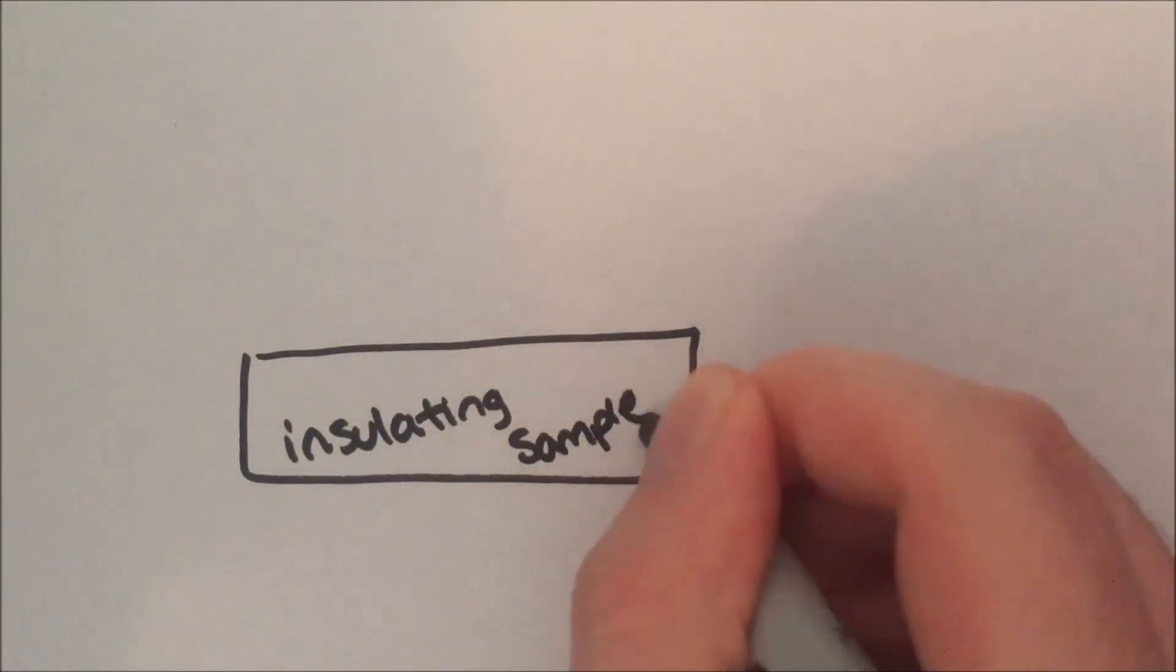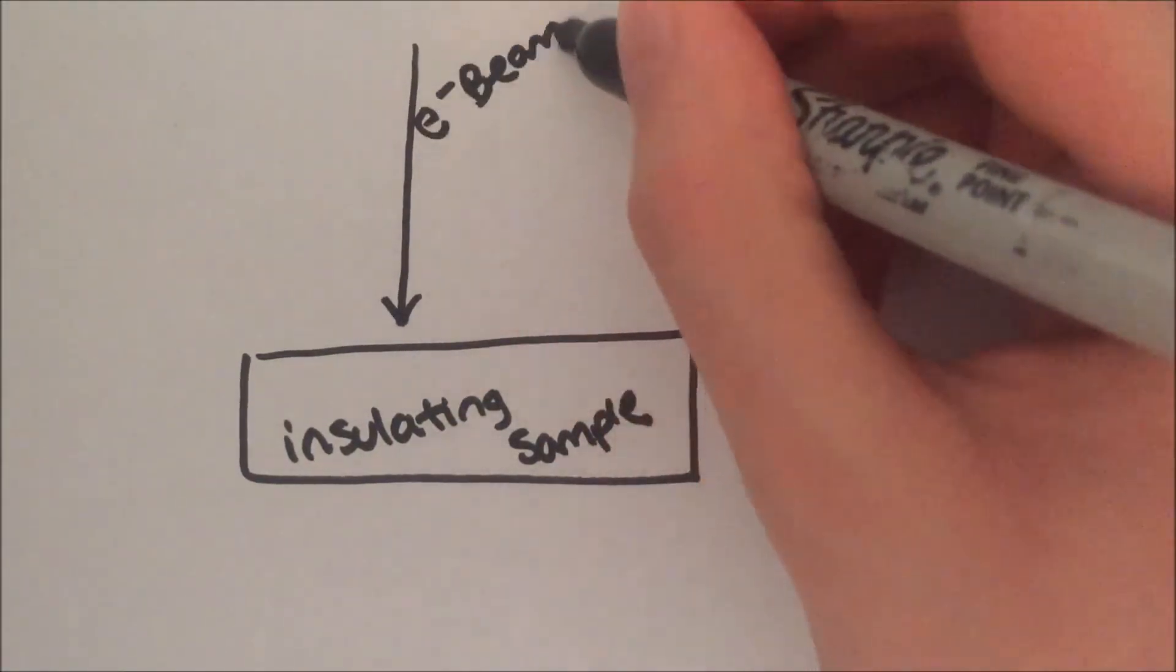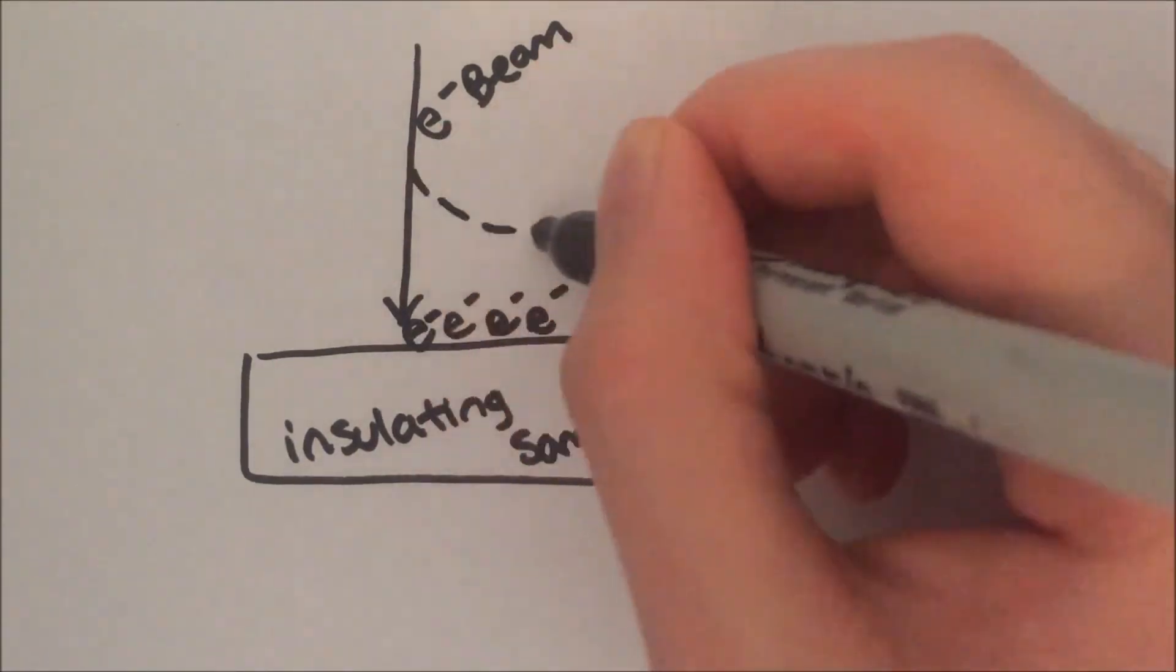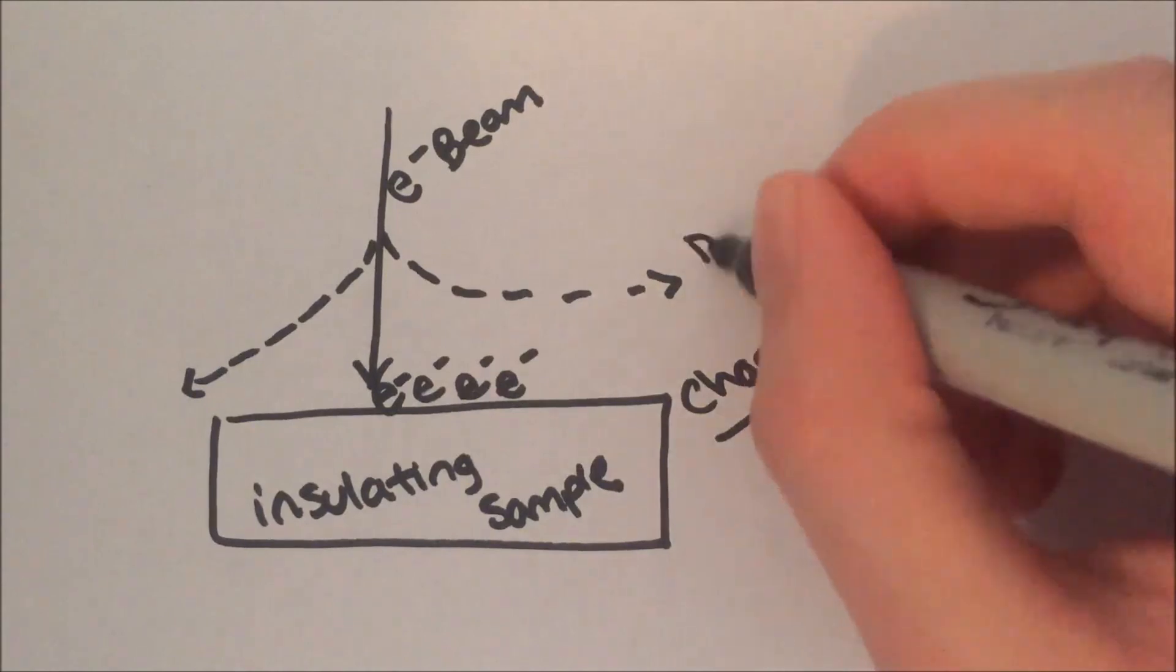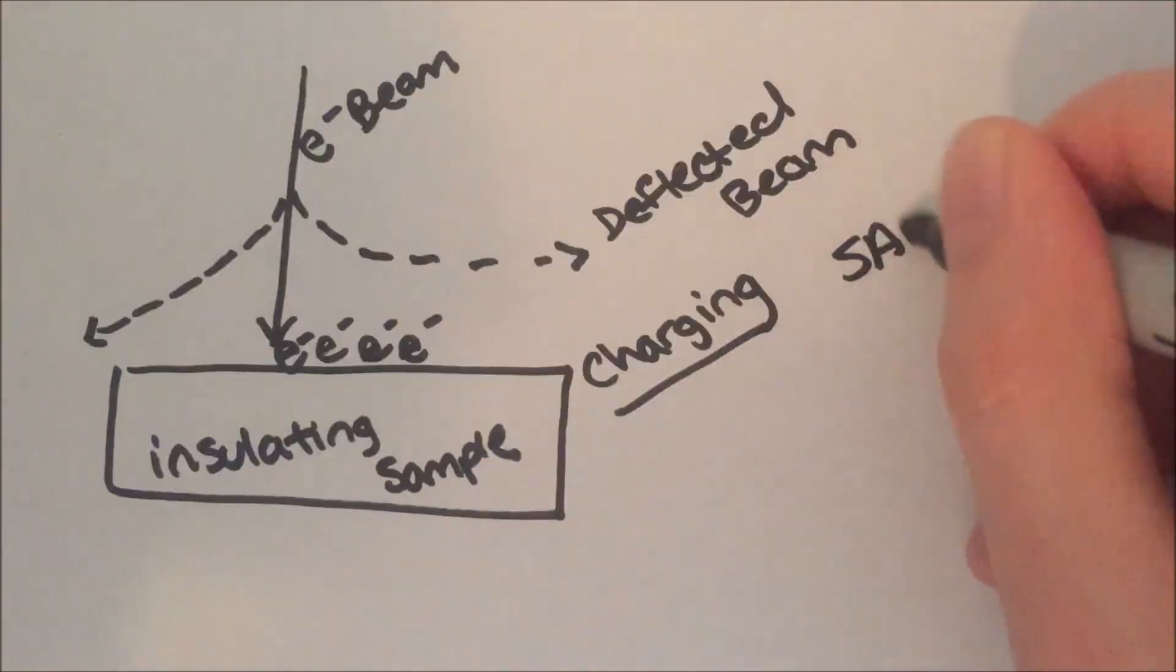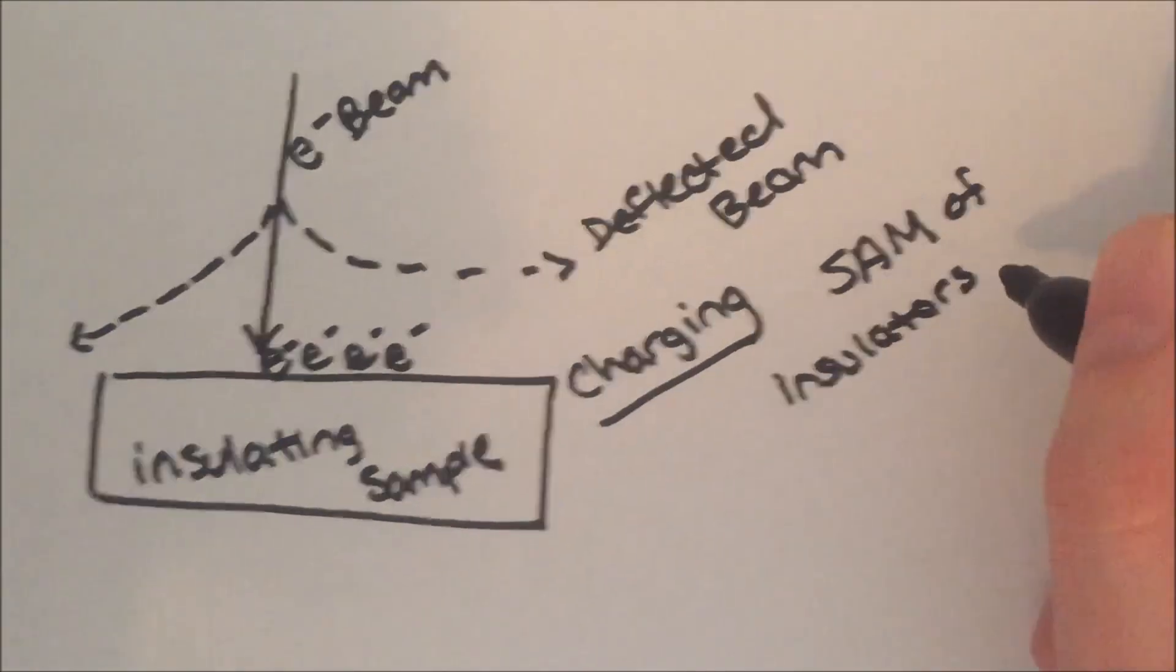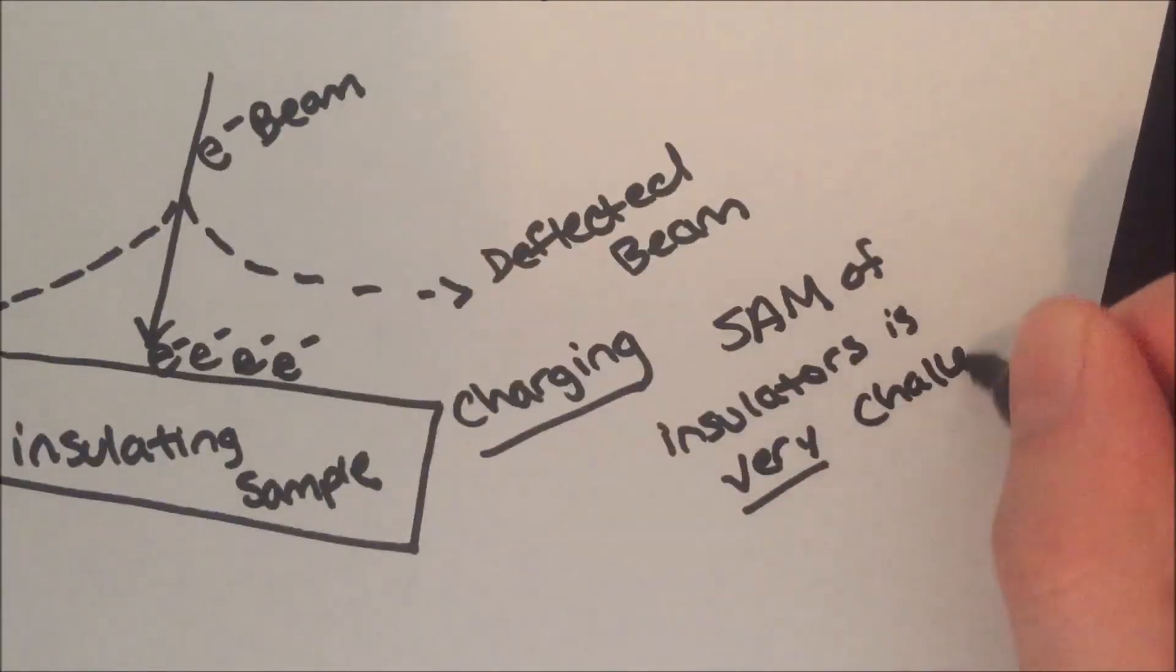Insulating samples also pose a challenge to analyze by Auger electron microscopy. Insulating samples prevent the flow of electrons away from the interaction area, creating a buildup of charge which can deflect the incoming electron beam away from the sample. This effect can make imaging and analyzing insulating samples very challenging.